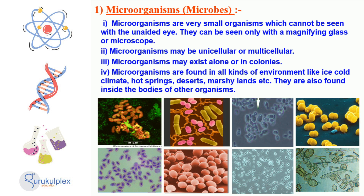Additionally, they live even inside other living creatures such as in the human body. They can be singular cells or have many cells and survive independently or in colonies. They need a microscope or a magnifier to be seen and are in charge of processes like decomposition, food production and disease prevention. Microbes are essential for the cycle of life and have a tremendous impact on our world.